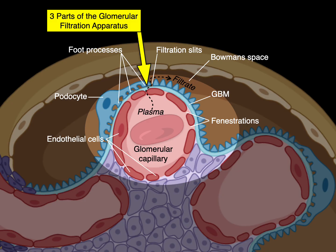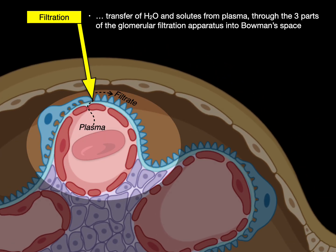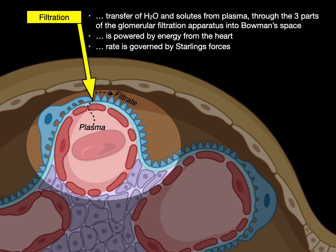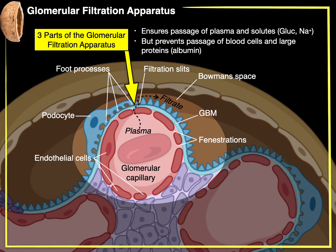So there are the three parts of the glomerular filtration apparatus. This ensures the passage of plasma and solutes like glucose, sodium, bicarbonate, potassium, calcium, magnesium, chloride, and so forth, but prevents the passage of red and white blood cells and large proteins like albumin that we want to retain in the plasma. This filtration is powered by the energy from the heart — the mean arterial pressure — and its rate is governed by Starling's forces: hydraulic pressure and oncotic pressure. And that, my friends, is the glomerular filtration apparatus in a nutshell.